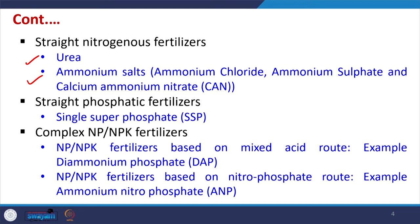Similarly, we have a straight phosphatic fertilizer — single superphosphate — which is being produced in India. The complex fertilizers produced in India are based either on the mixed acid route or on the nitrophosphate route. For example, di-ammonium phosphate is based on the mixed acid route, whereas ammonium nitrophosphate is based on the nitrophosphate route. These are the different types of fertilizers manufactured within our country.